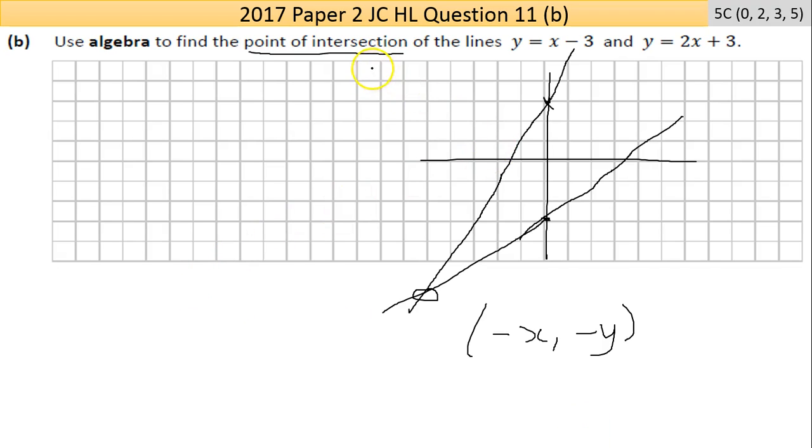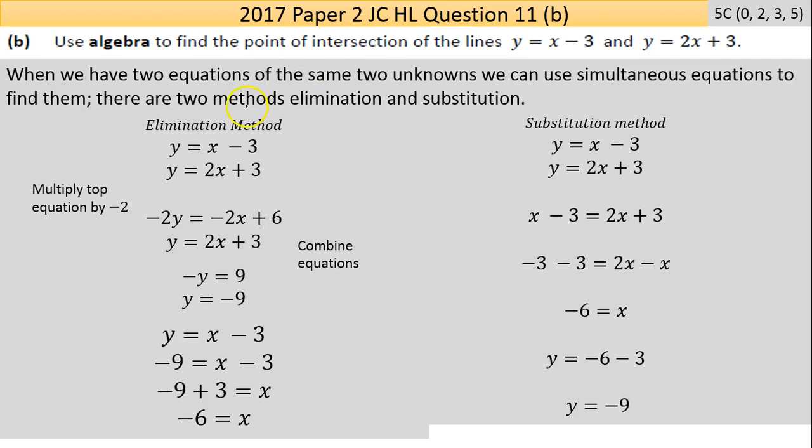Now if you ever see this kind of question and you see point of intersection, this is simultaneous equations. There are two methods I'll go through now. One is the elimination method and one is called the substitution method. With the elimination method, you have to put the two equations on top of each other. I'm going to call them equation 1 and equation 2 just for clarity.